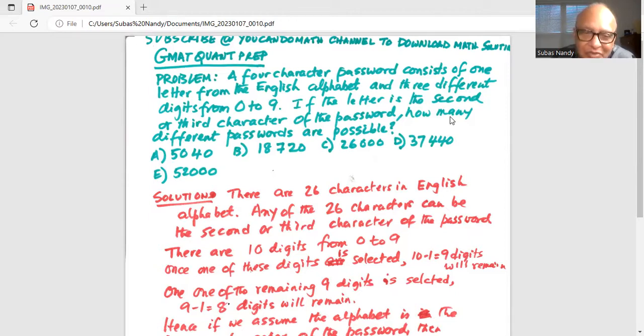Not nine, it is 10 actually if you count. So once one of these digits is selected for the password, then we'll have 10 minus one, 9 digits will remain. When one of the remaining 9 digits is selected, 9 minus 1, 8 digits will remain.